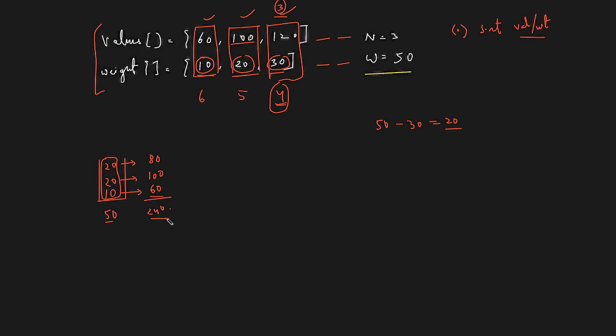To summarize the approach: first sort items by value per weight in descending order. Then iterate — if you can pick an item completely, do so; otherwise pick a fraction and stop. The time complexity is O(n log n) for sorting and O(n) for iteration. Space complexity is constant.